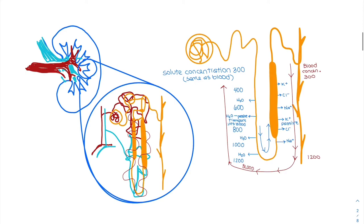The kidney is our main site for regulating electrolyte levels. Almost everything gets filtered through the kidneys, except for proteins and things attached to proteins. Zooming in on the glomerulus — there are large pores that help filter everything through, but they're not big enough for proteins to pass through.